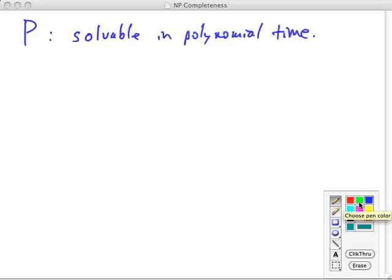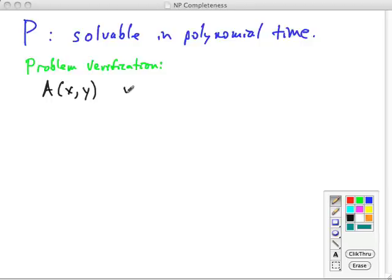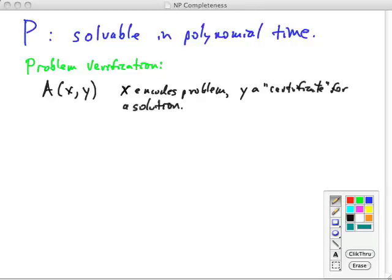Now to introduce the class NP, we need the concept of problem verification, which goes like this. We have a verification algorithm A, which is going to take two arguments, x and y. x is going to encode the problem, and y will be a certificate for a solution. A couple things to say about this: x must use a reasonable binary encoding. For example, you don't encode numbers in unary because that would make the input very large, and then you could say, 'Oh, my program is really fast because it's not so slow given the input size.' That's because you blew up the input size unnecessarily.